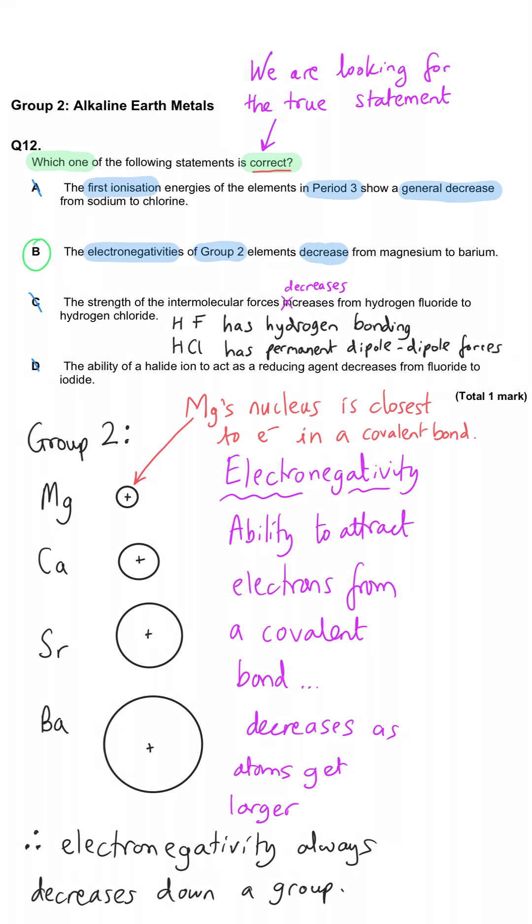And D is also false. That halide ion is going to be a better reducing agent as we go down group 7 from fluoride to iodide.